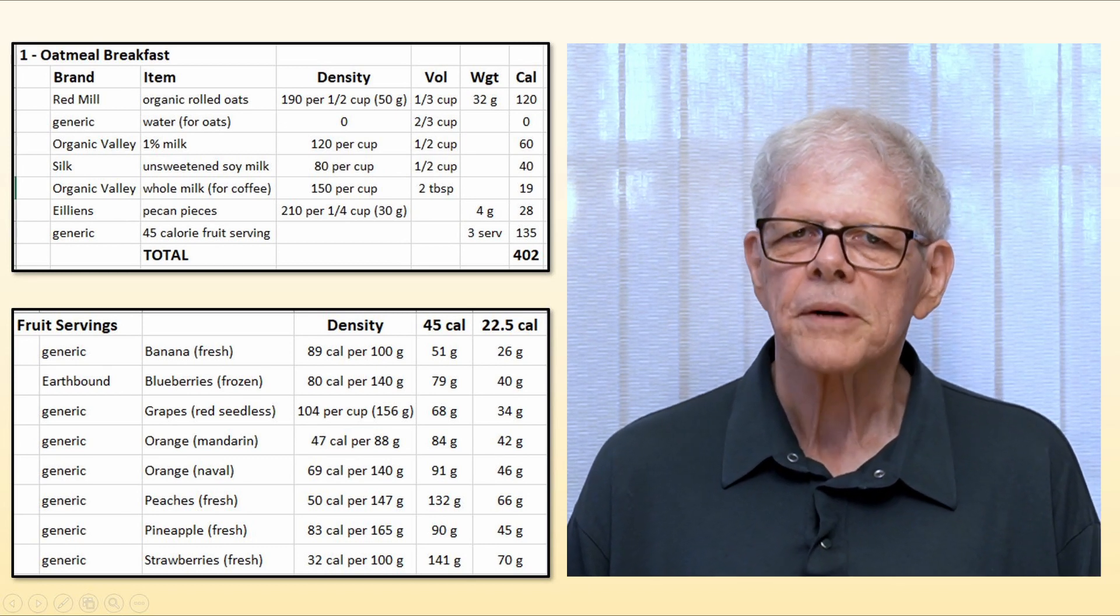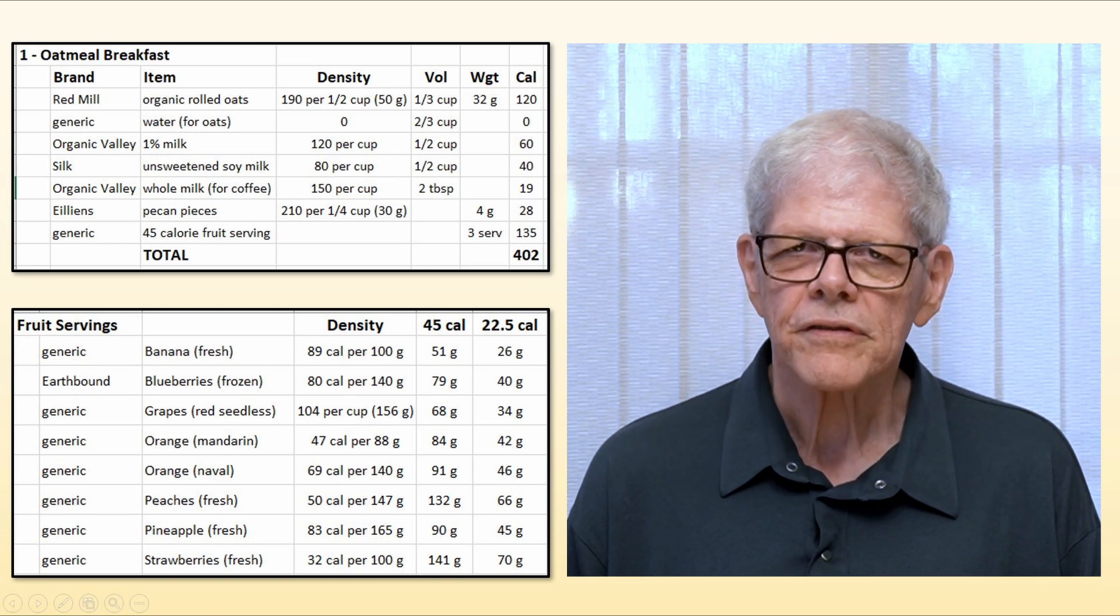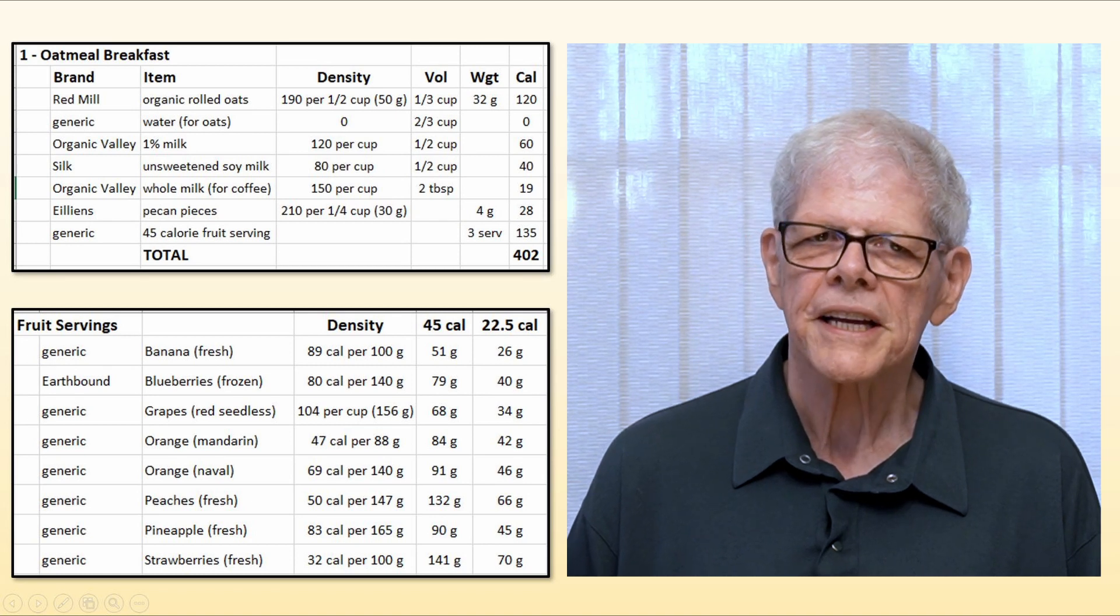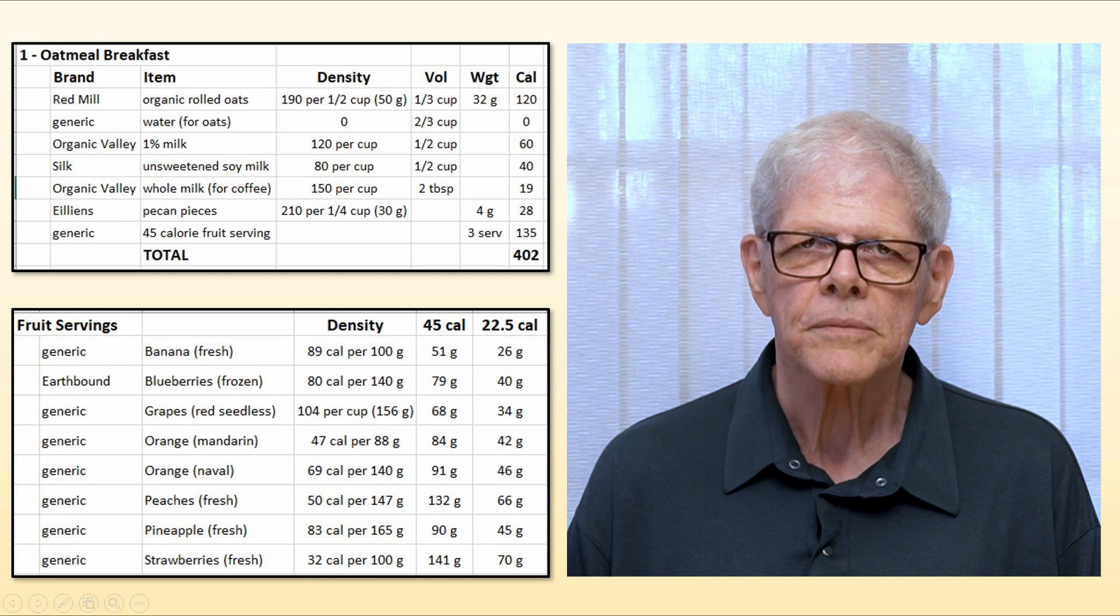The brand and item columns indicate what the item is. The density column is taken from the food label and shows how many calories the manufacturer says are in the indicated volume or weight.